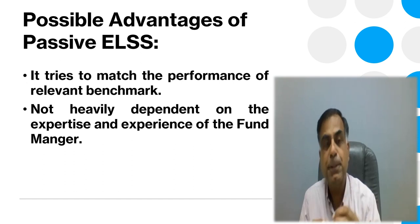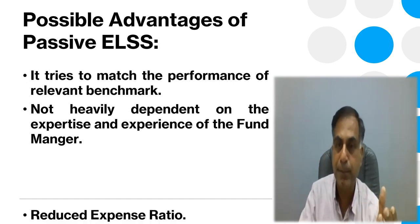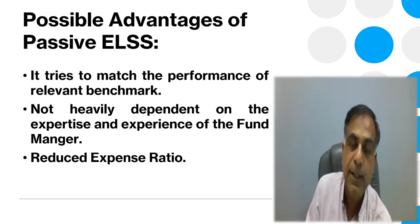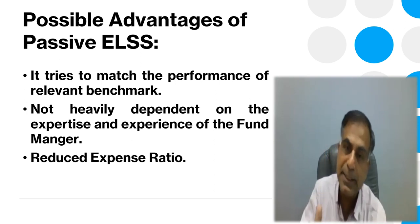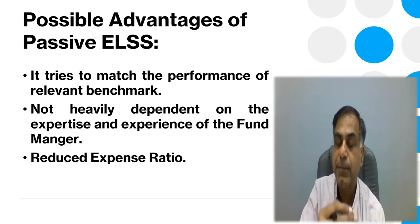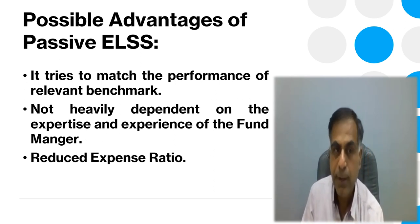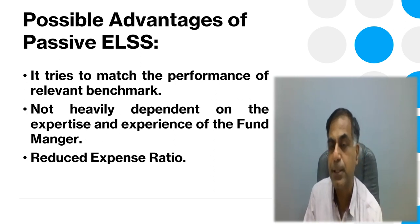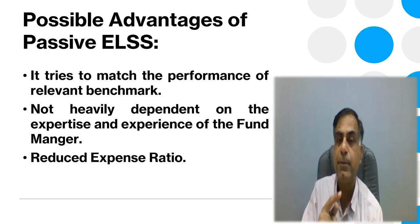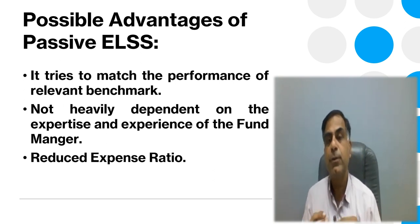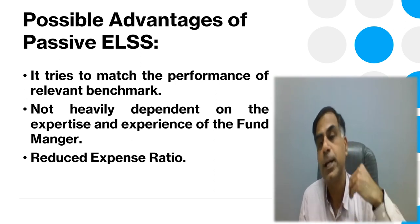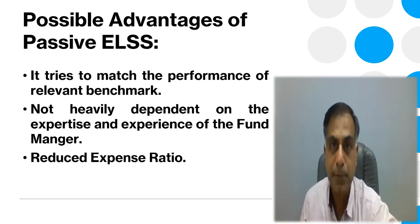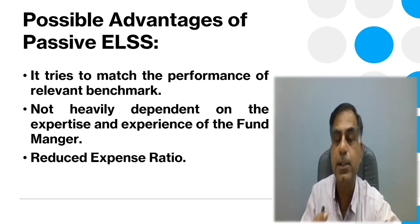Passive ELSS is not heavily dependent on the expertise and experience of the fund manager. Reduced expense ratio is another very interesting feature. In an active ELSS scheme, the charges applied by the fund house range from 1 to 2%. But in a passive ELSS, the fund house charges are around not more than 0.5%. That means over a long period of time when you invest in a passive ELSS scheme, the net NAV allocated to you is higher compared to what could be allocated in an active ELSS. This reduced expense ratio is a very important feature when deciding to invest in passive ELSS.